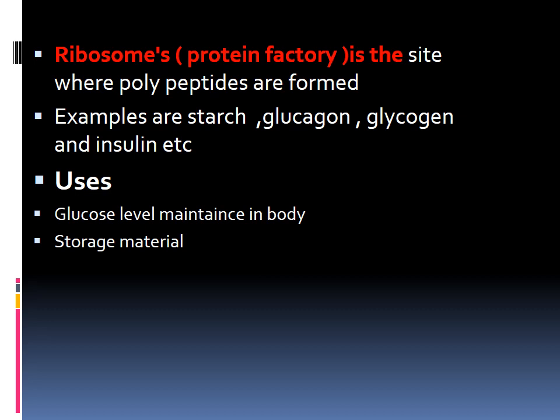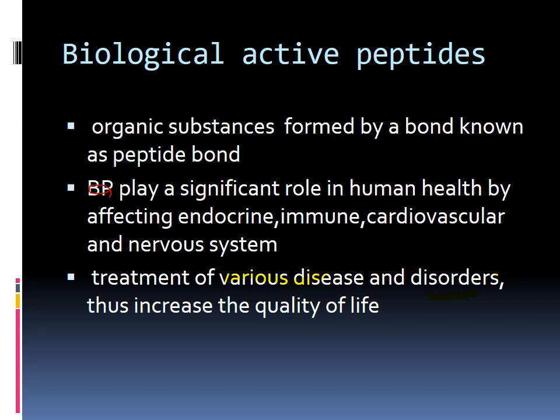These biologically active peptides and polypeptides are produced in ribosomes, which are the protein factory. Examples of polypeptides are starch, glucagon, glycogen, and insulin. Glycogen and starch are both storage materials — glycogen is an animal storage material and starch is a plant storage material. Glucagon and insulin play an important role in glucose maintenance. Each peptide or polypeptide has its own function according to the needs of the body.